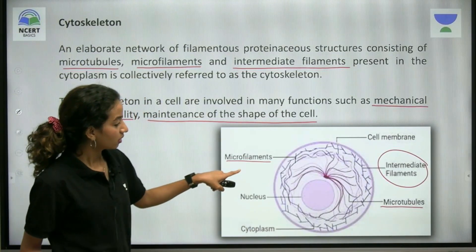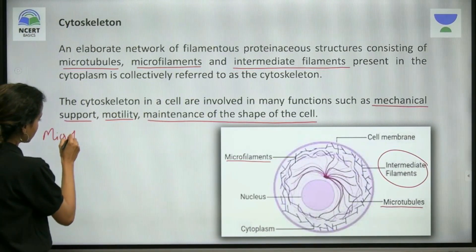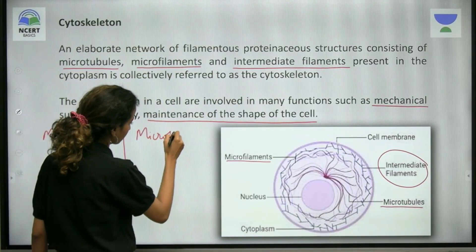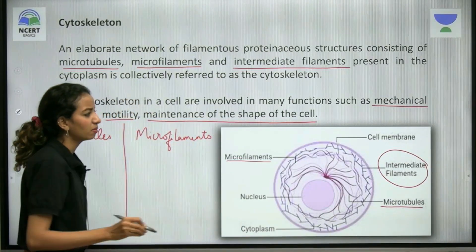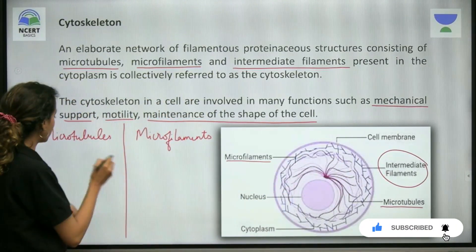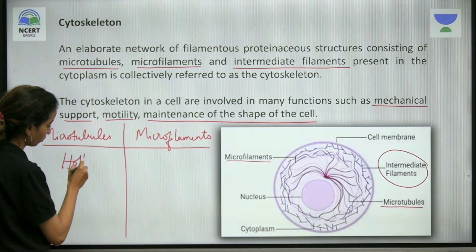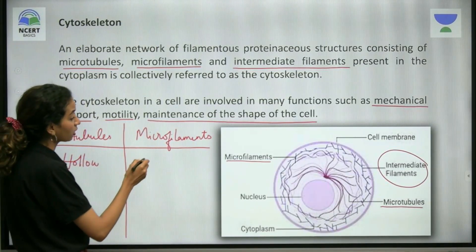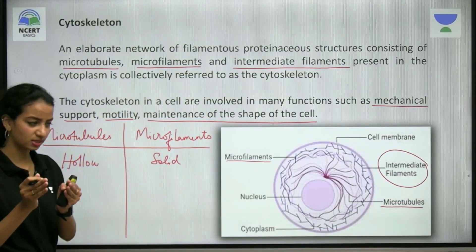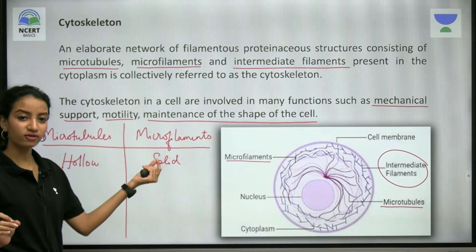The main components are microtubules and microfilaments. Intermediate filaments are also present but they are simply scattered within the cytoplasm without any particular location. Microtubules and microfilaments are the main parts of the cytoskeleton. Microtubules are hollow structures, whereas microfilaments are solid structures — hollow means there is a space inside, while solid means there is no space inside.